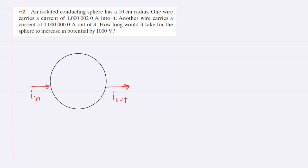We've drawn an isolated conducting sphere, and we were told that there is a current of this value that is traveling into that sphere, and we've labeled that in the diagram as I_in. And then at the same time, there's a current that's going out of the sphere, and we've labeled that I_out.